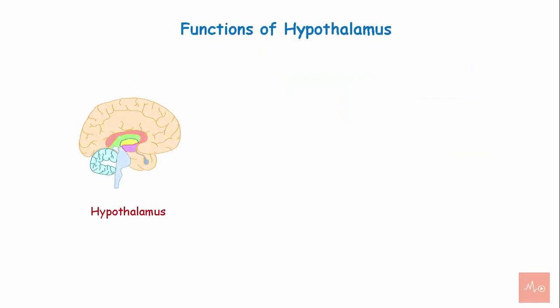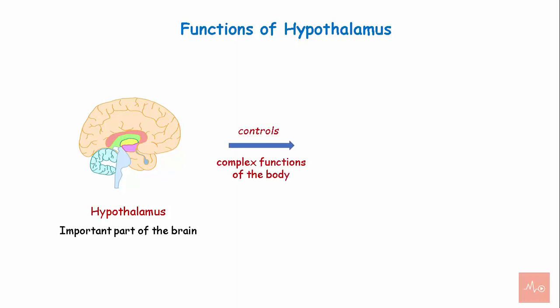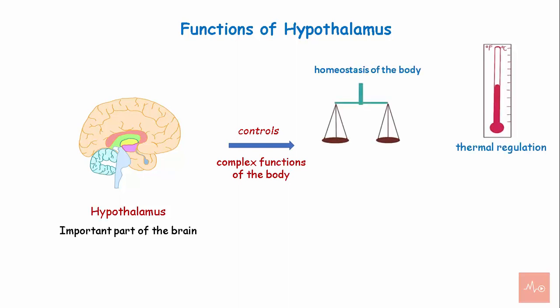The hypothalamus is a small but important part of the brain. Through its neural pathways and connections, the hypothalamus controls complex functions of the body like maintaining homeostasis, thermal regulation, secretion of hormones, and many more functions.